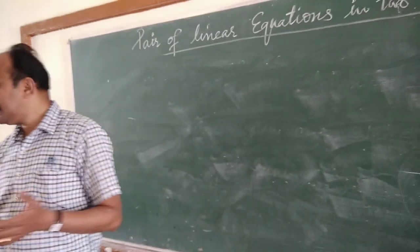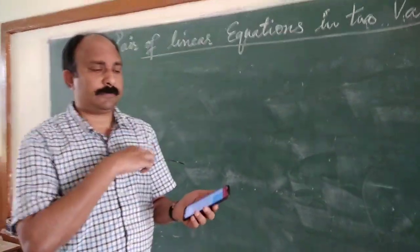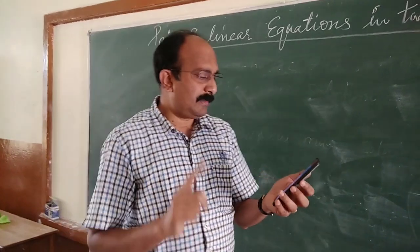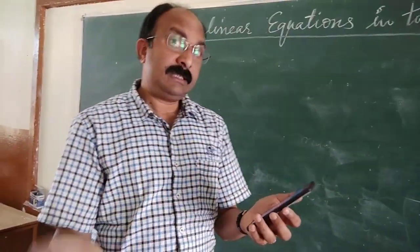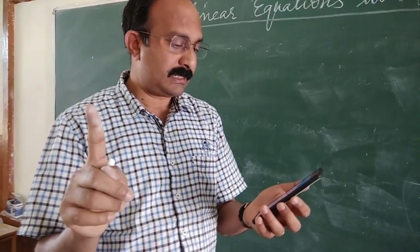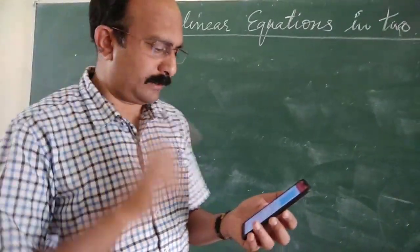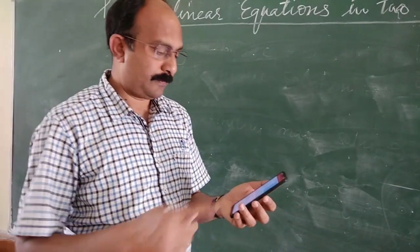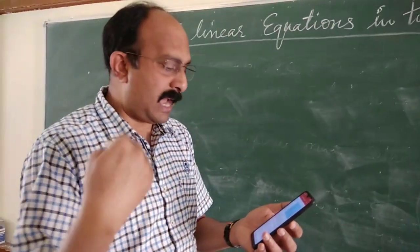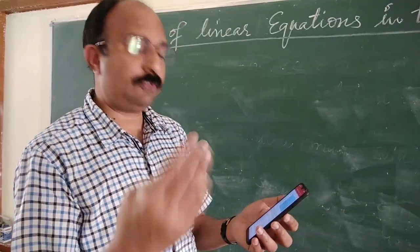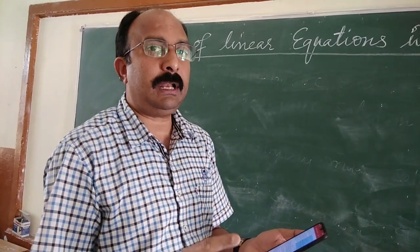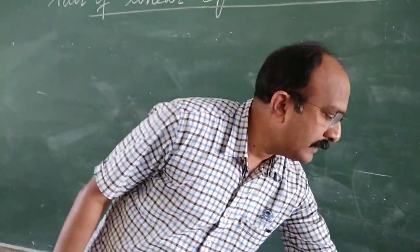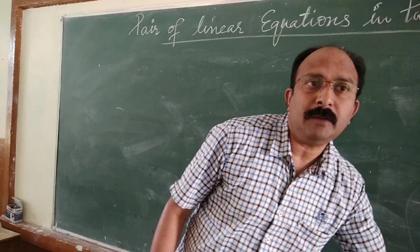Exercise 3.1, Question number 1: Akhtar tells his daughter, 'Seven years ago I was seven times as old as you were then. Also, three years from now I shall be three times as old as you will be.' Represent this situation algebraically and graphically. This question is about the ages of two people: Akhtar and his daughter.